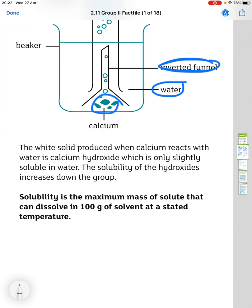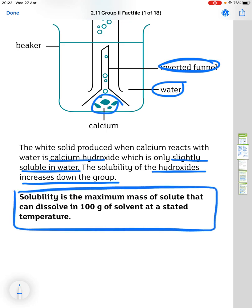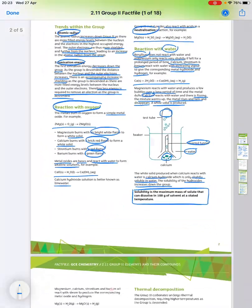So, the white solid produced when calcium reacts with water is calcium hydroxide, which is only slightly soluble in water. The solubility of the hydroxides increases down the group. And solubility is the maximum mass of solute that can dissolve in 100 grams of solvent at a stated temperature.